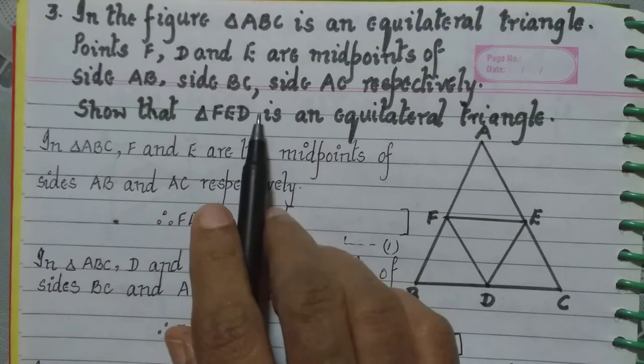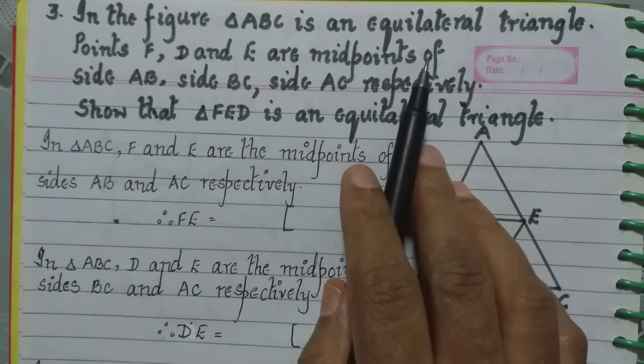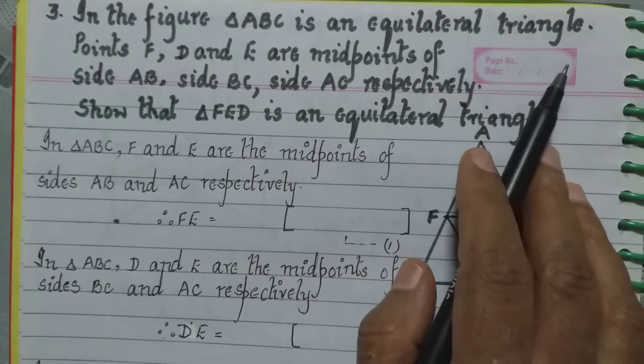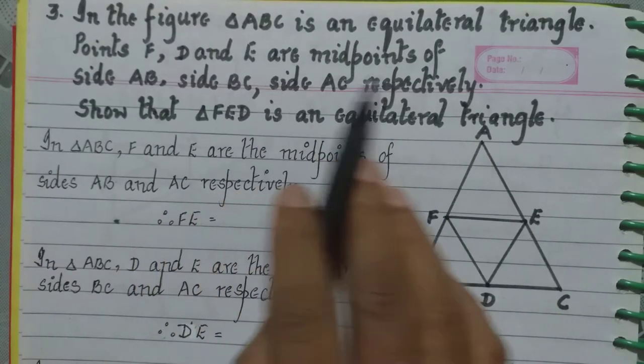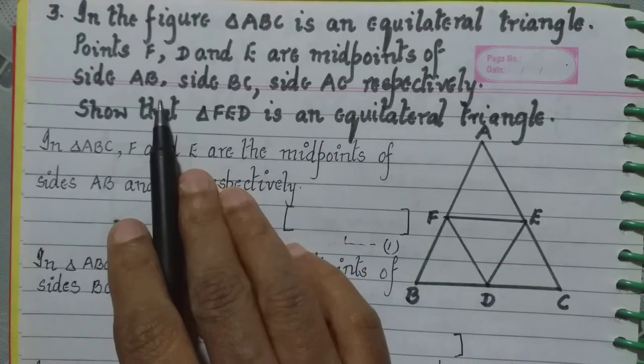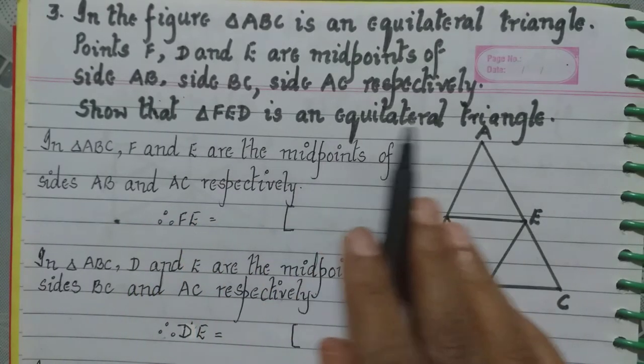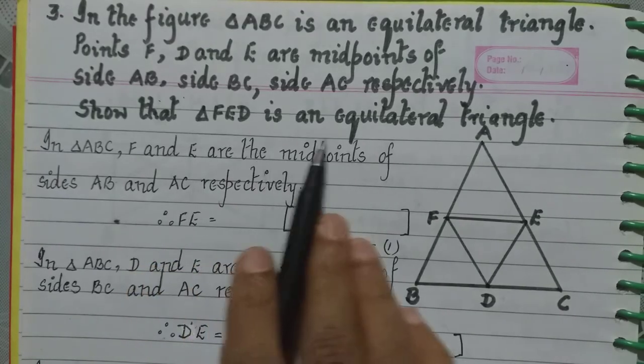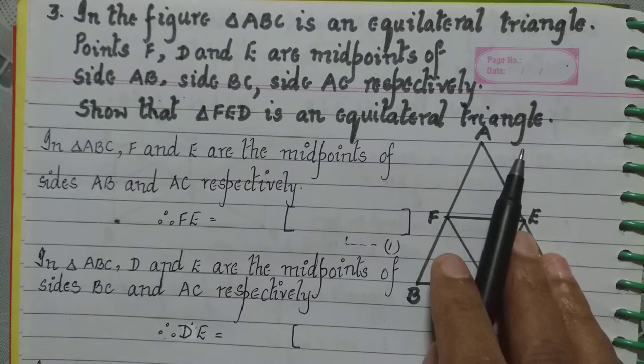Coming to the third question. In the figure, triangle ABC is an equilateral triangle. Points F, D and E are midpoints of the sides AB, side BC and side AC respectively.